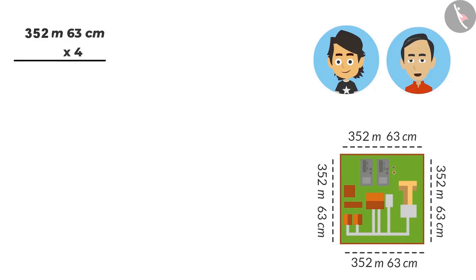Very good. See, what comes after multiplying? 63 multiplied by 4 will give 252 centimetres. Alright. And multiplying 4 into 352 metres will be 1,408 metres. This means that the boundary of your office is 1,408 metres and 252 centimetres.